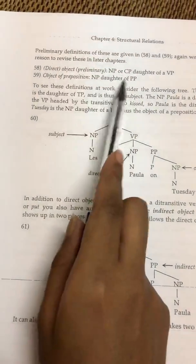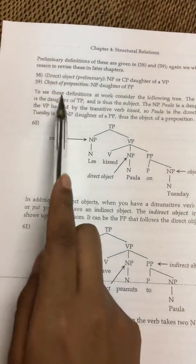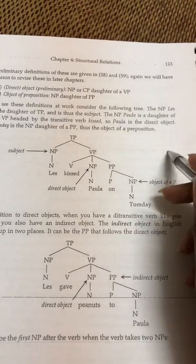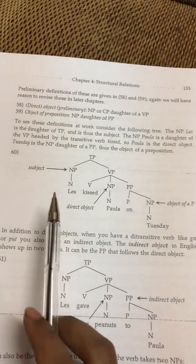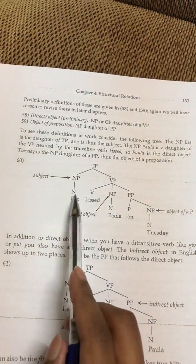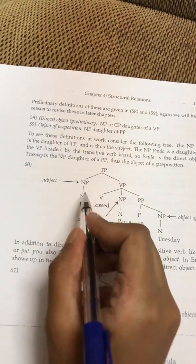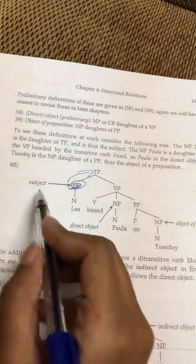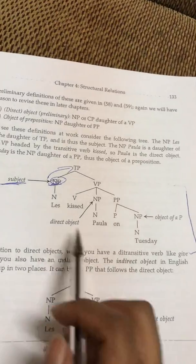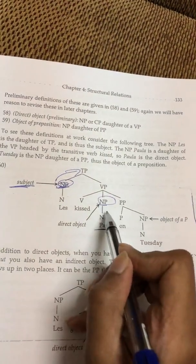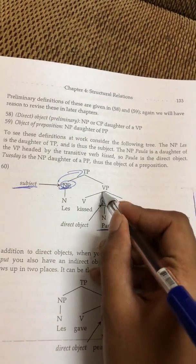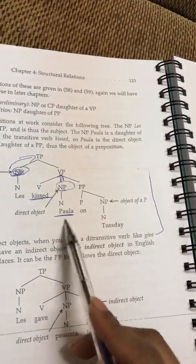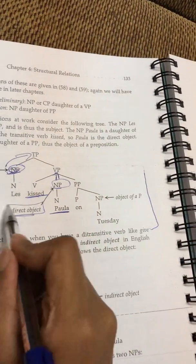The direct object is the noun phrase or CP that is a daughter of a verb phrase. The object of preposition is the noun phrase that is a daughter of a preposition phrase. Look at this example: the noun phrase 'Lisa' is the daughter of TP, and is thus the subject. The noun phrase 'Paula' is the daughter of the verb phrase headed by the transitive verb 'kiss,' so Paula is the direct object.